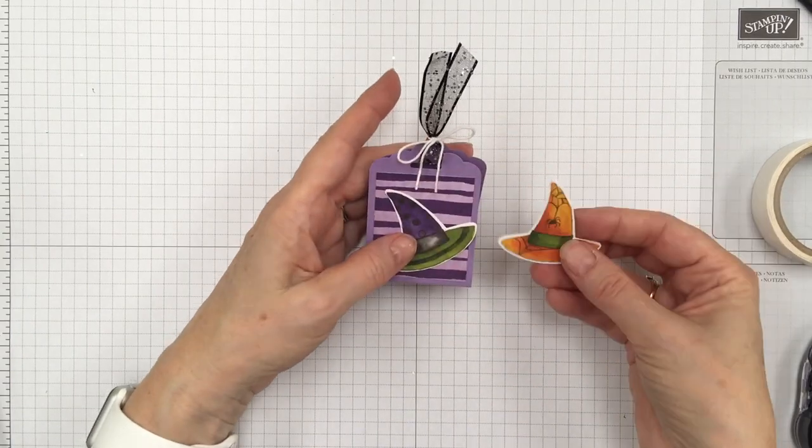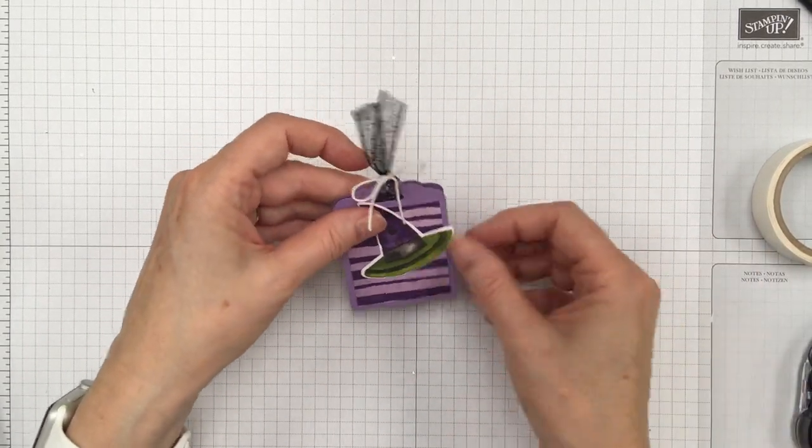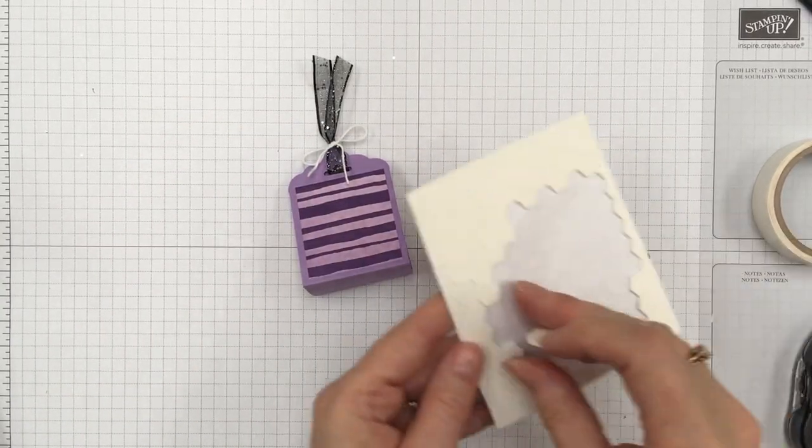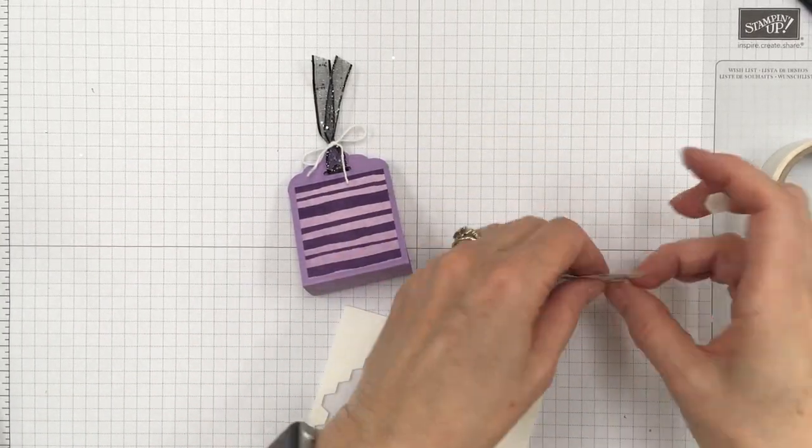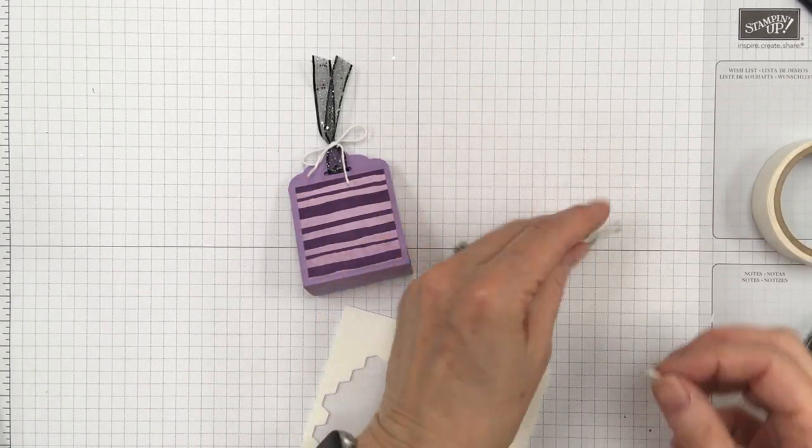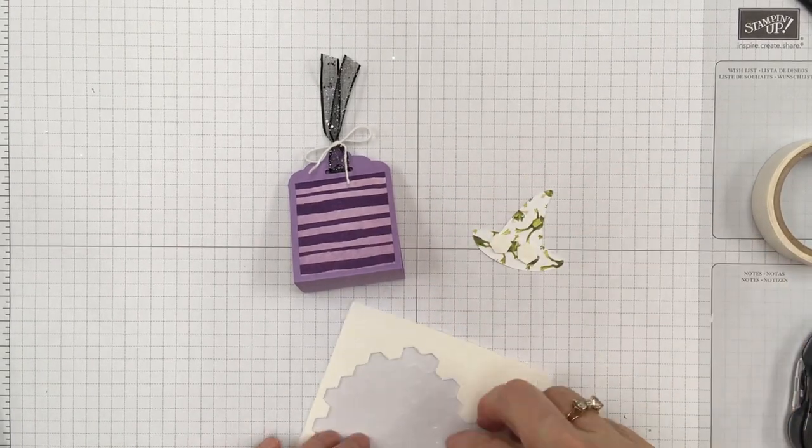So we'll use, let's see which one, that one or that one. And I think I'm going to go with this one. So I just put some Stampin' Dimensionals on the back. Oh, and see, that's the other thing. On this opposite side, it's little frogs and that would be a cute little hat too. So there's lots of options with this paper.